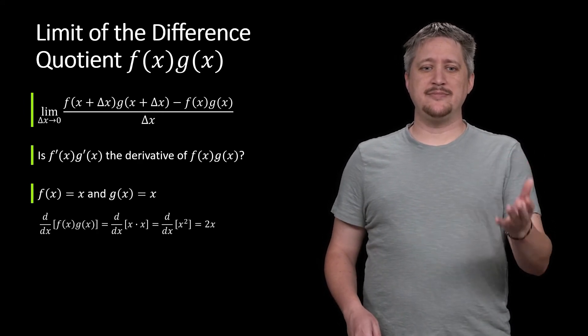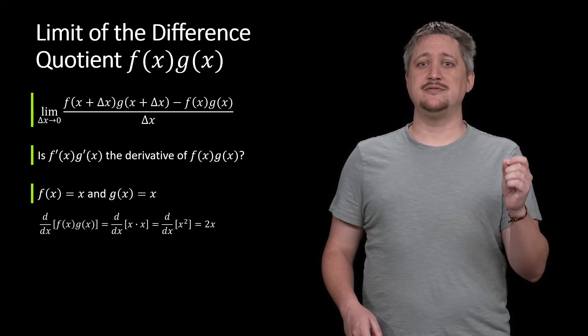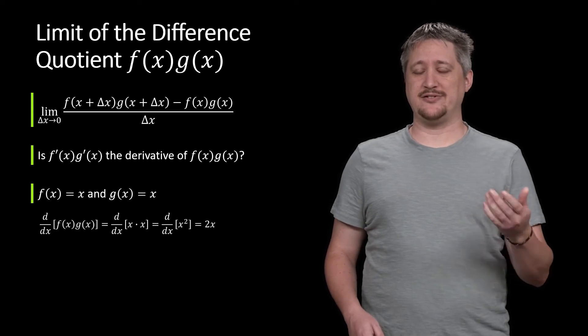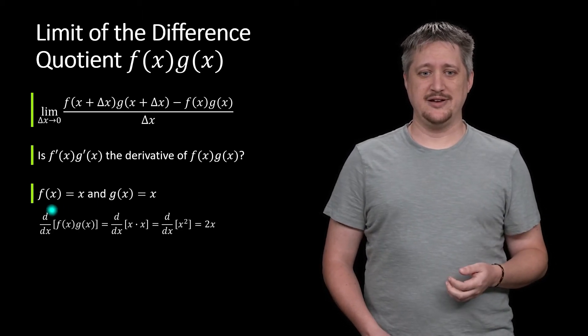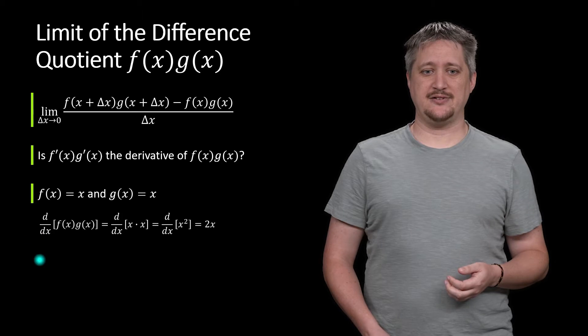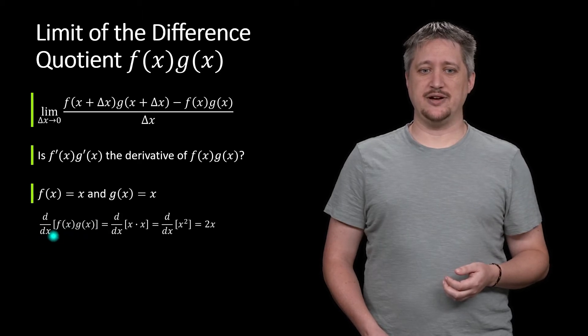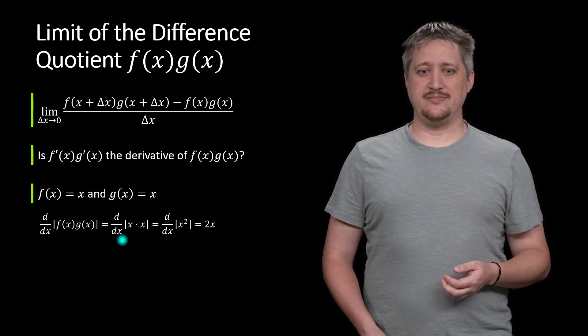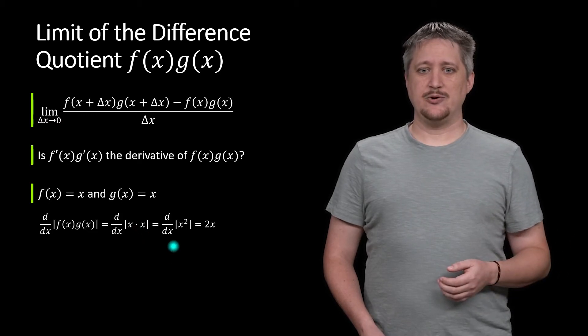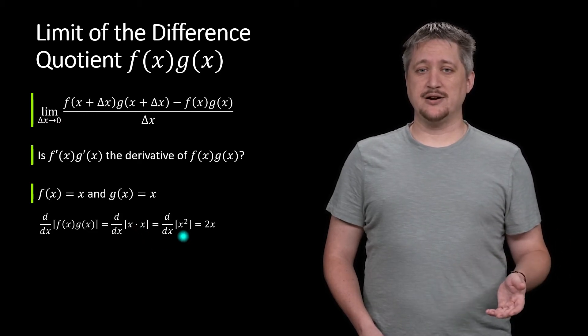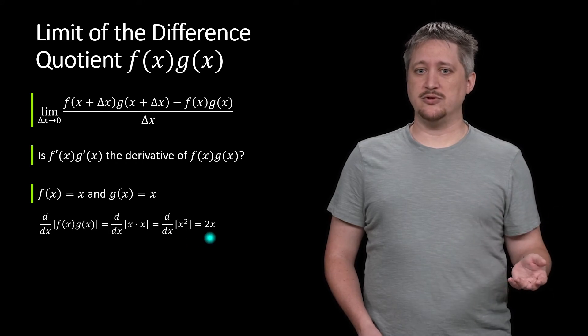Now if I want to do the derivative of f(x) times g(x), that's the derivative of x times x, which means it's the derivative of x², which using your polynomial rule is 2x.